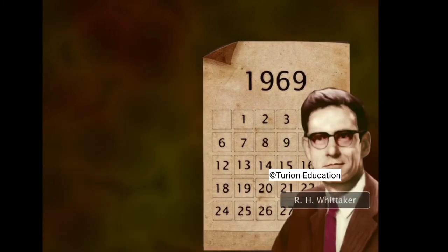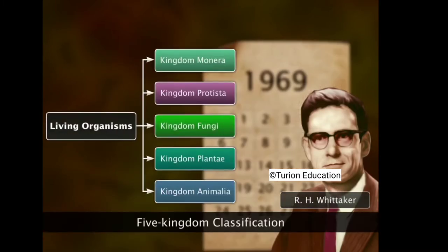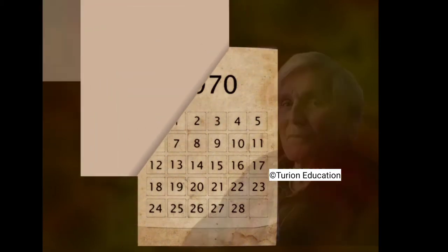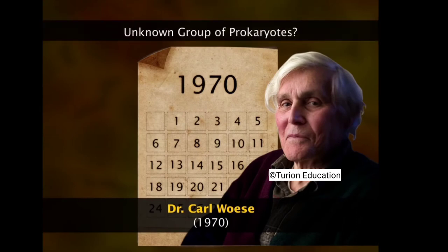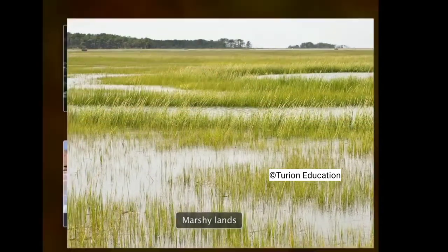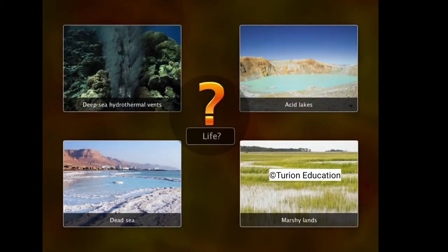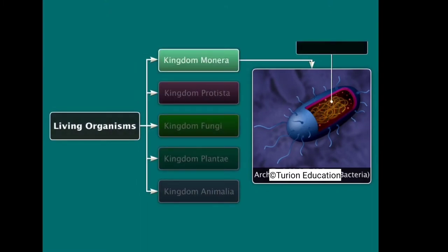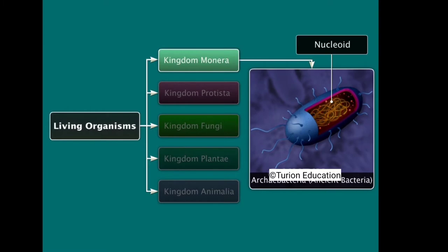In 1969, R.H. Whittaker classified life into five kingdoms, placing all prokaryotic unicellular bacteria under Kingdom Monera. During the early 1970s, Dr. Carl Woese found an unknown group of prokaryotic organisms living in extreme environments — deep-sea hydrothermal vents, acid lakes, the Dead Sea, and marshy lands. Their prokaryotic appearance placed them in Kingdom Monera, named archaebacteria, meaning 'ancient bacteria.'